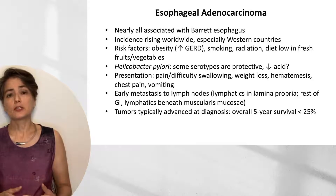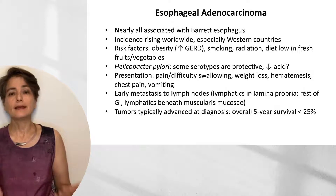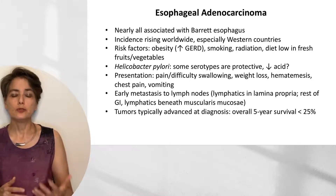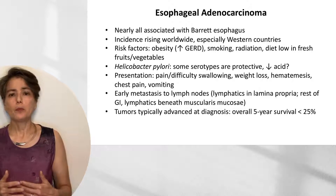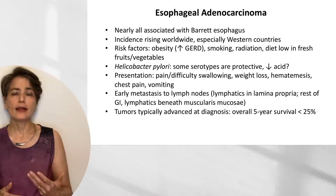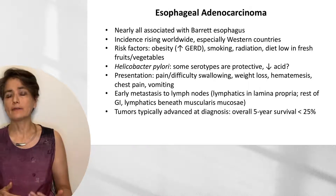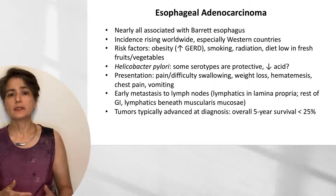Interestingly, some serotypes of Helicobacter pylori are protective against esophageal adenocarcinoma, because they decrease gastric acid, reducing injury and the tendency towards Barrett esophagus. Patients with esophageal adenocarcinoma present with pain and difficulty swallowing, which can progress from a normal diet to a liquid-only diet. Patients may then experience weight loss due to lack of nutrition or disseminated disease.